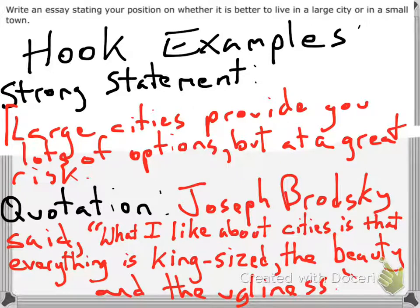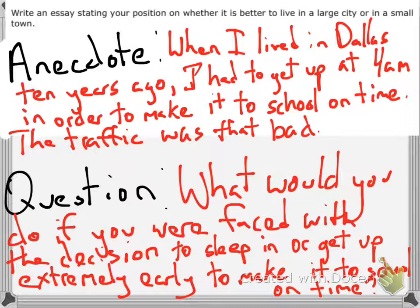For a quotation, using information from the box on the prompt, we can state: Joseph Brodsky said, 'What I like about cities is that everything is king-sized, the beauty and the ugliness.' When using quotations and strong statements, your next sentence needs to explain them. Notice the model: say the person's name, then say 'said' before you use the quote. For an anecdote, keep it to no more than two sentences: 'When I lived in Dallas 10 years ago, I had to get up at 4 a.m. in order to make it to school on time. Traffic was that bad.' And for a question: 'What would you do if you were faced with the decision to sleep in or get up extremely early to make it to school on time?'